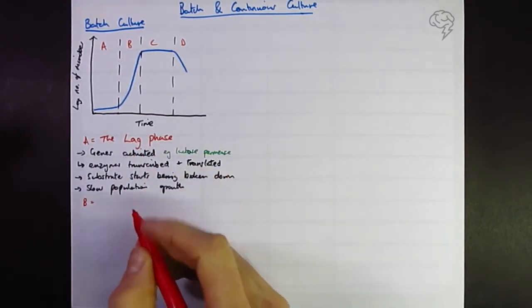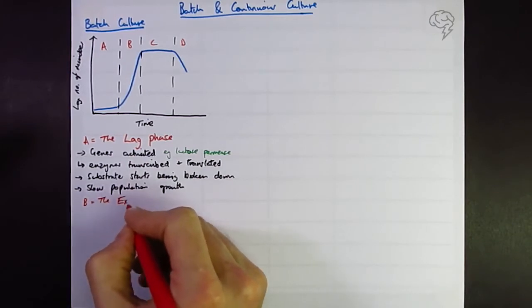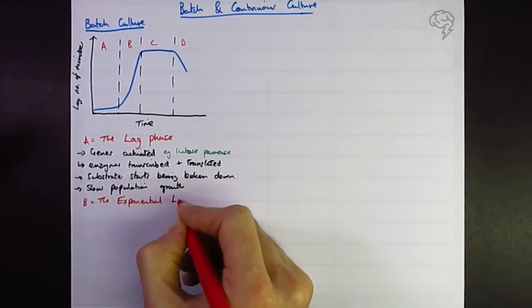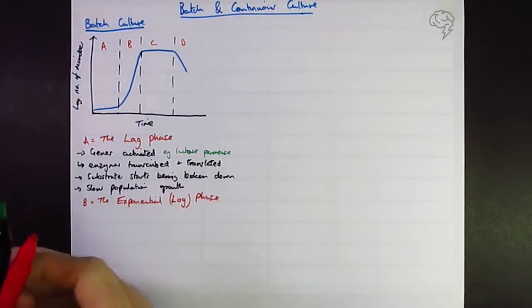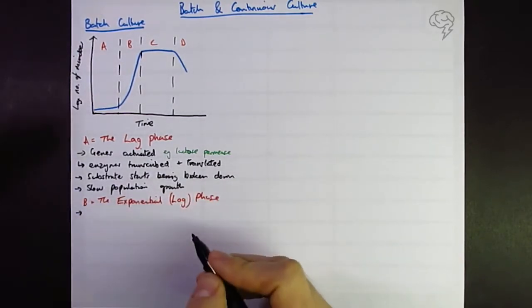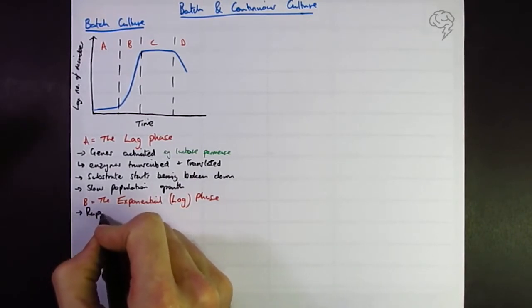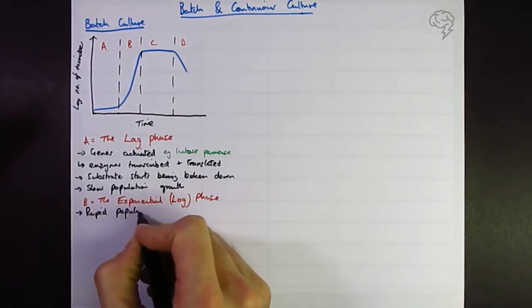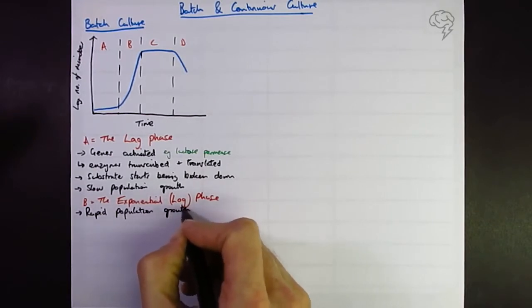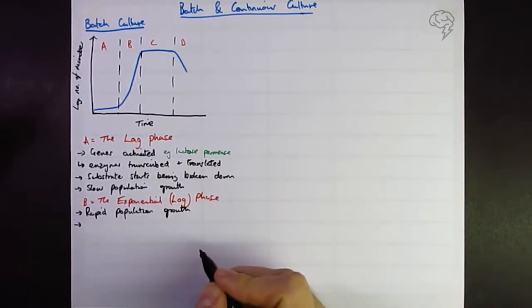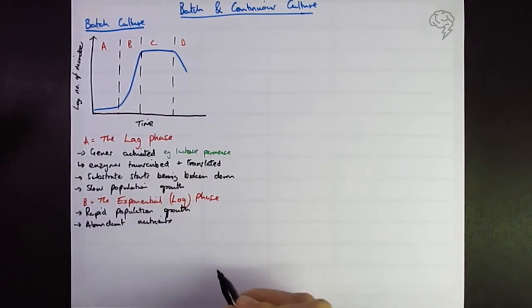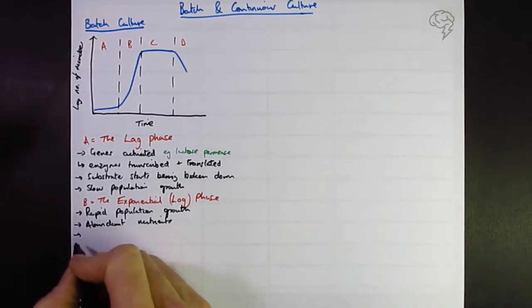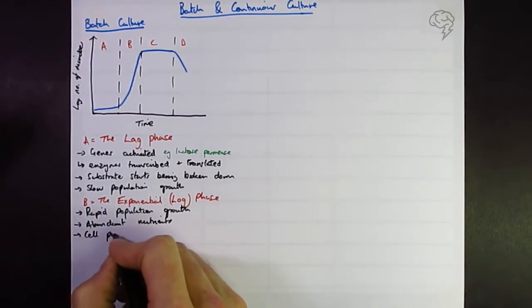B, what are the characteristic features of this? It's either called the exponential, and I generally call it that just to confuse the difference with lag and log, but it's also called the log phase. So what's happening here? Well, we're primed up for life, there's loads of nutrients around, so there's rapid cell division. In fact, I'm going to say population growth is probably better. We've got abundant nutrients.